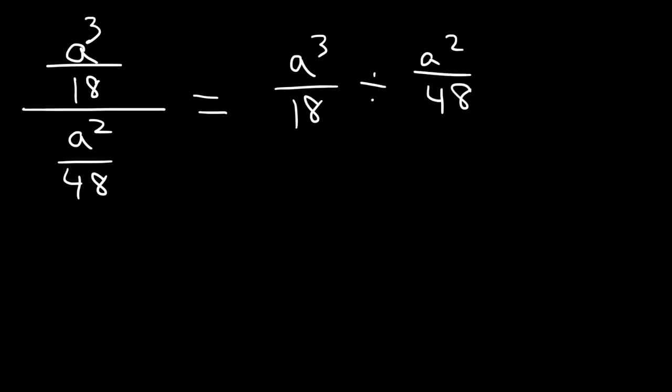Here's another problem that you could try. Divide a cubed over 18 by a squared over 48. Now if you ever were to see a problem like this, you need to know that you can rewrite it in a form that's more familiar. This is equivalent to a cubed over 18 divided by a squared over 48. Now in this form we can do everything that we did in the last examples.